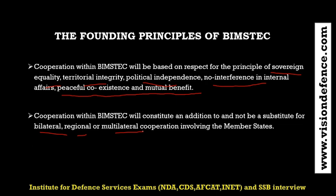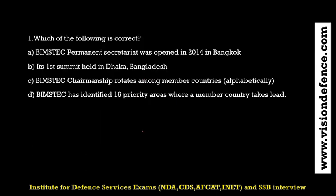MCQ: Which of the following is correct? Option A states the BIMSTEC permanent secretariat was opened in 2014 in Bangkok - the year is correct but Bangkok is wrong, it was opened in Dhaka. The first summit was held in Bangkok, not Dhaka. BIMSTEC's chairmanship rotates among member countries alphabetically - this is correct.